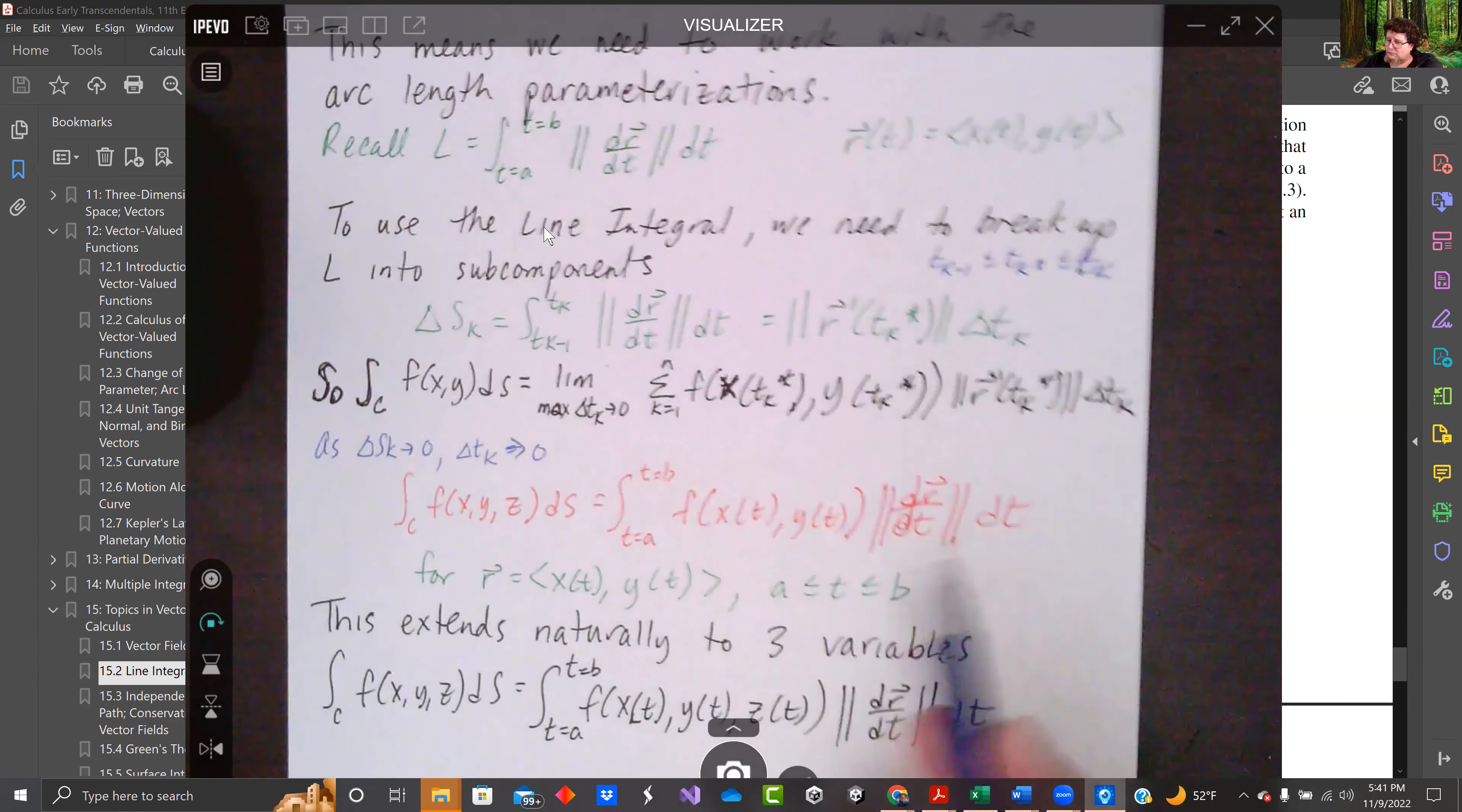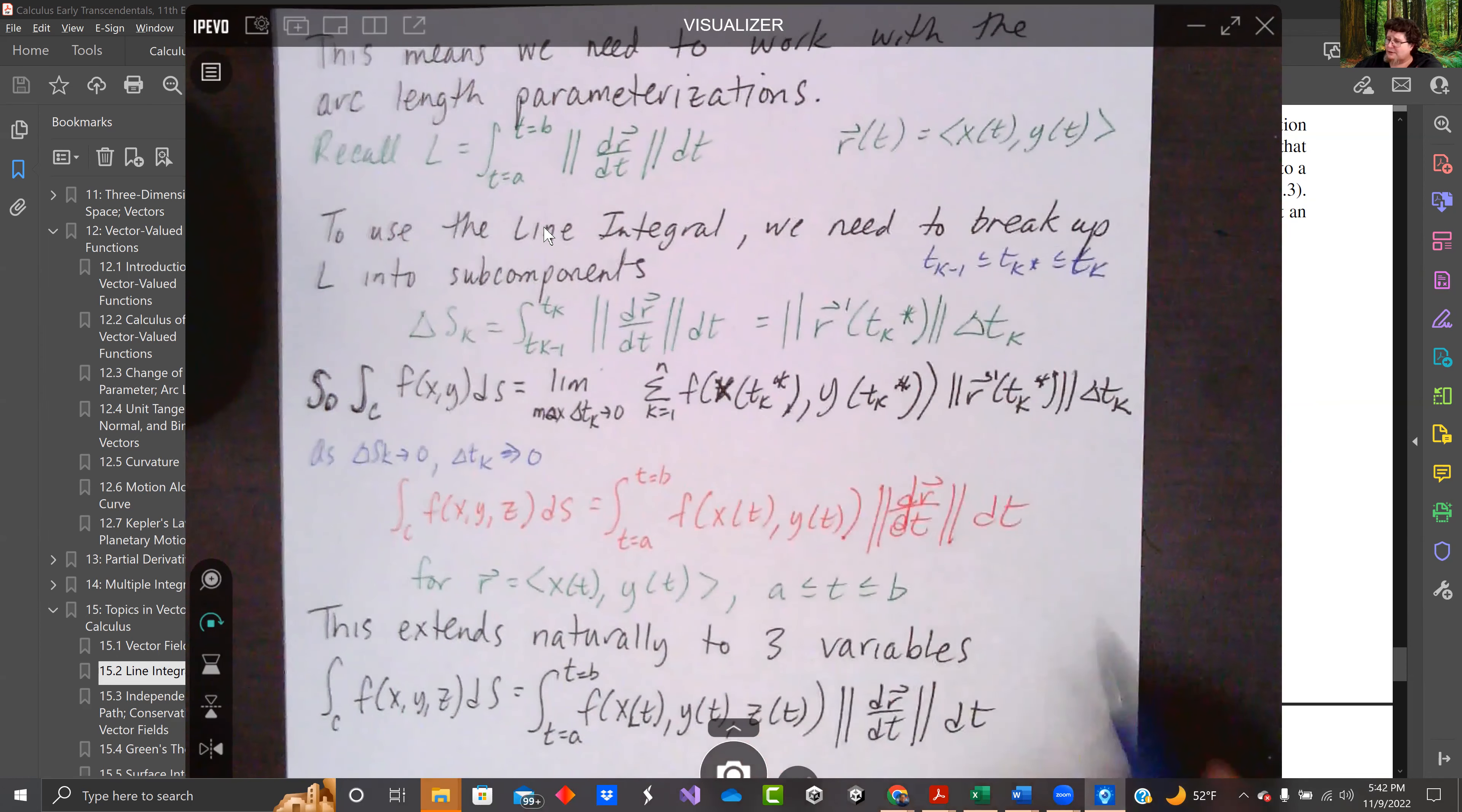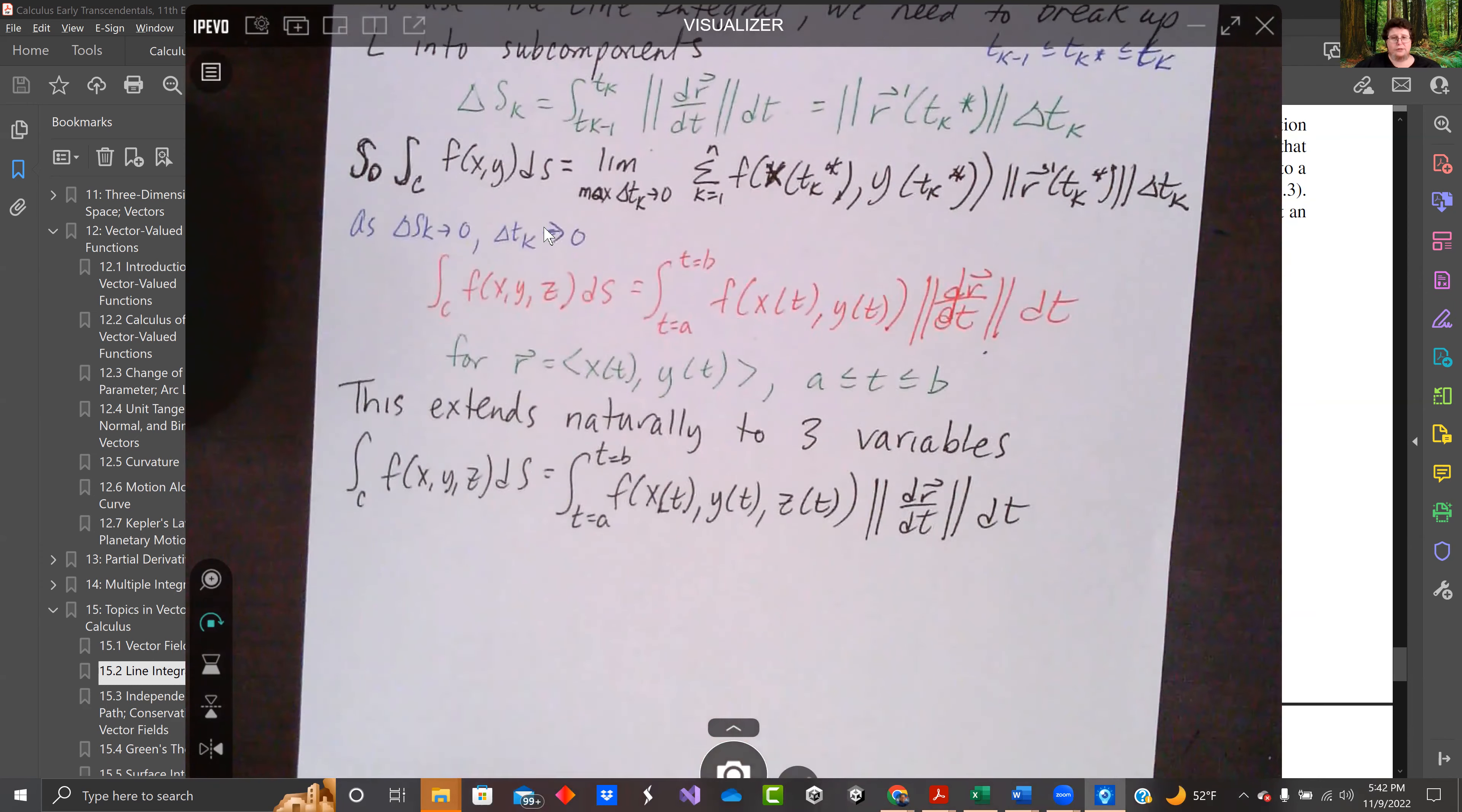So the integral of f over the curve, following the arc length, we could just write it as f of x(t), y(t). And then we've got dr dt dt. It also goes up to three variables.